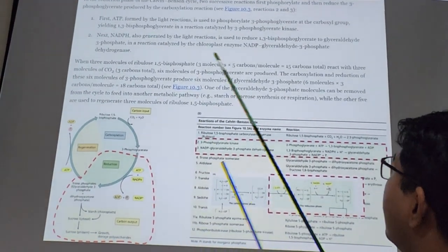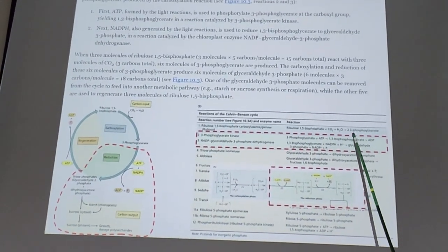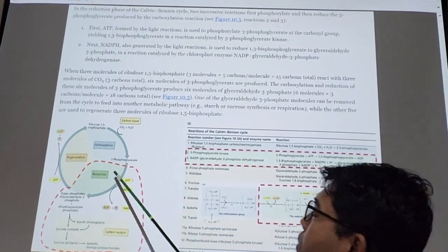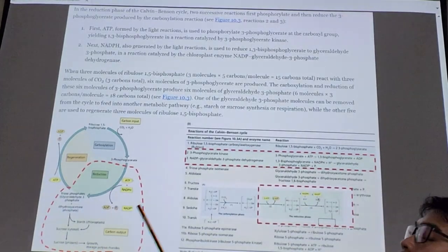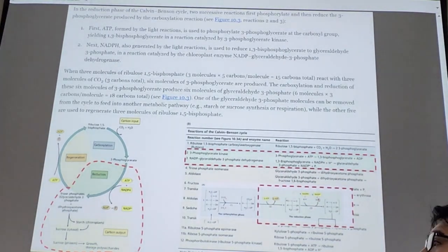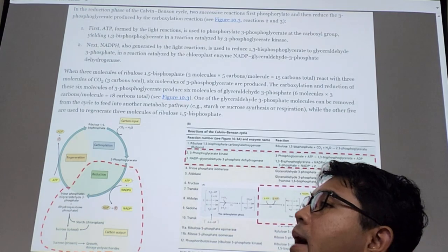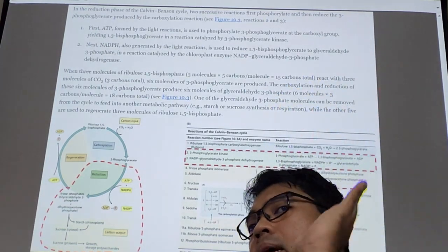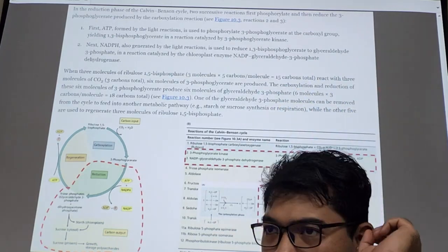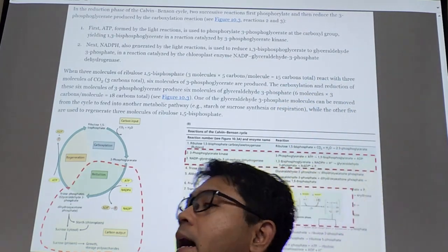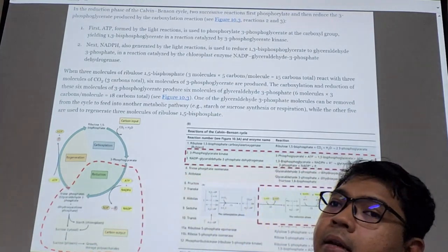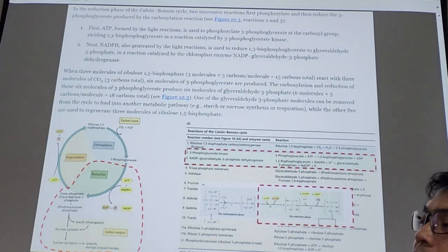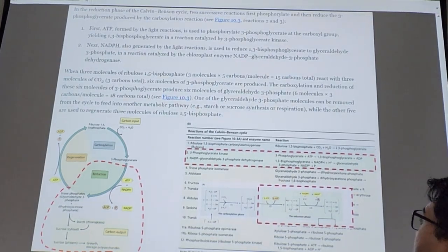So now, this product, phosphoglycerate, will enter the second phase of the Calvin cycle, which is the reduction phase. Reduction has nothing to do with something getting trimmed off or pruned off. We are talking about biochemistry, meaning that it receives hydrogen. As simple as that. Reduction in chemistry means somebody is receiving hydrogen. Right. So what happens here?